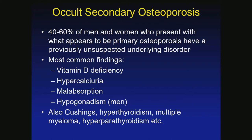There are not a lot of foods that have vitamin D — milk has a little added, and oily fish like cod. So we are seeing vitamin D deficiency in many older adults who don't want sun exposure and aren't on a multivitamin. The good news is it's really easy to treat. Other common secondary causes include hypercalciuria, malabsorption, hypogonadism in men, Cushing's, hyperthyroidism, multiple myeloma, and hyperparathyroidism.